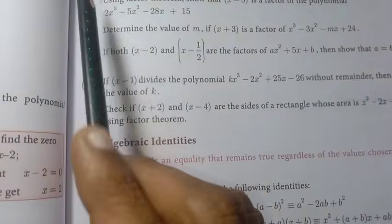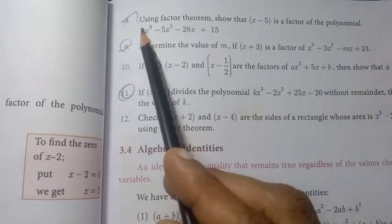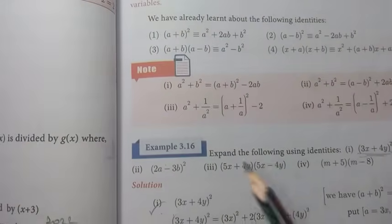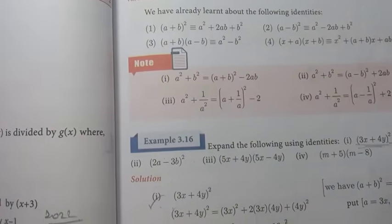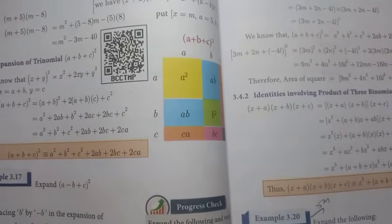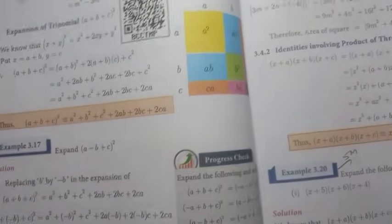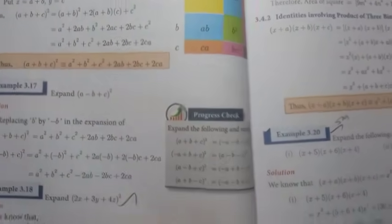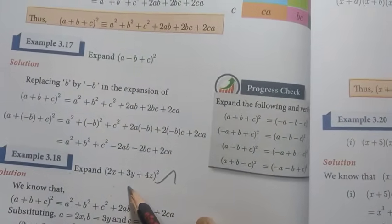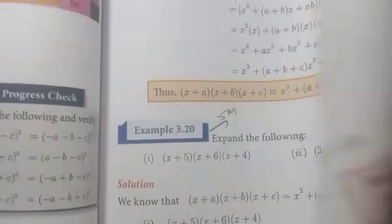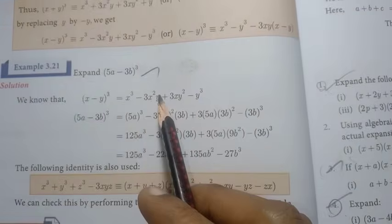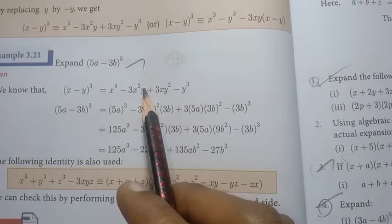Right side page number 97: 8th, 9th, and 11th. Next Example 3.16 — first sum. Page number 98, Example 3.18. Then Example 3.20. Example 3.21 important.